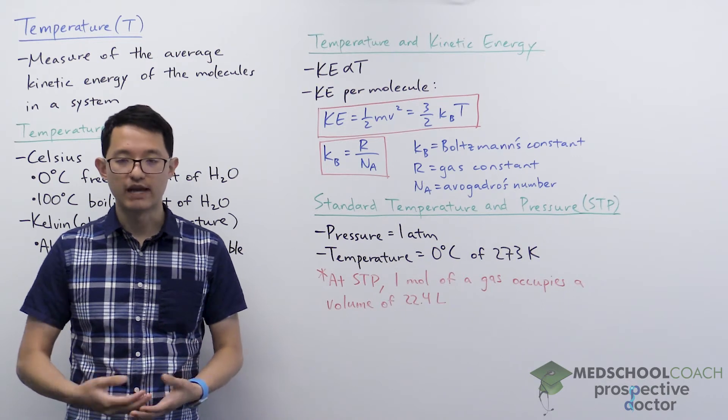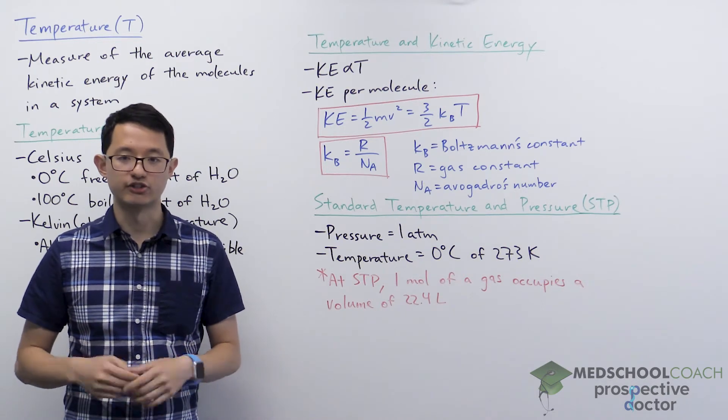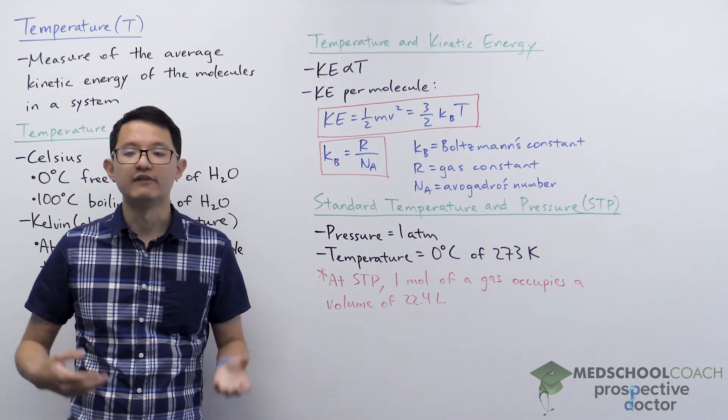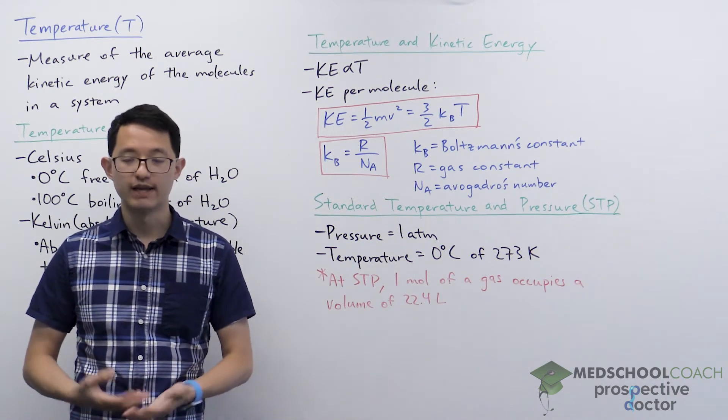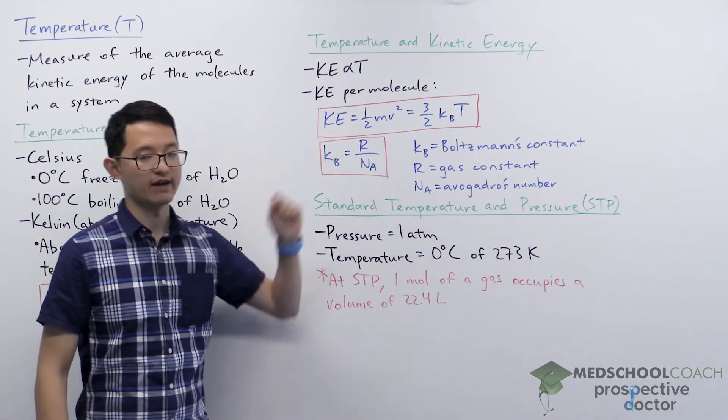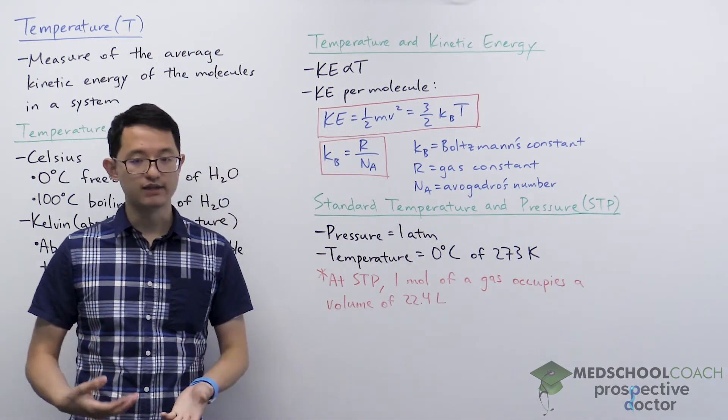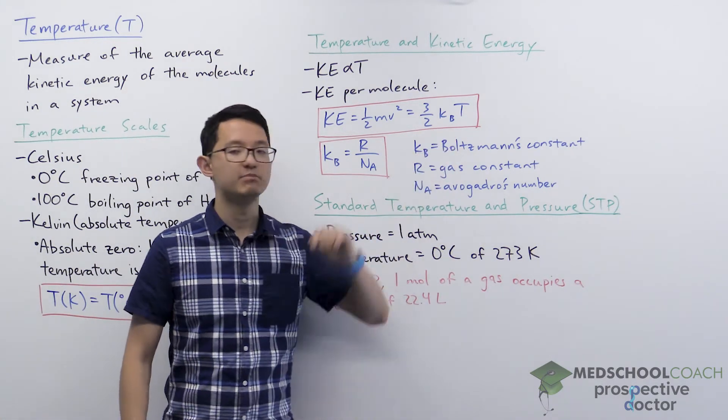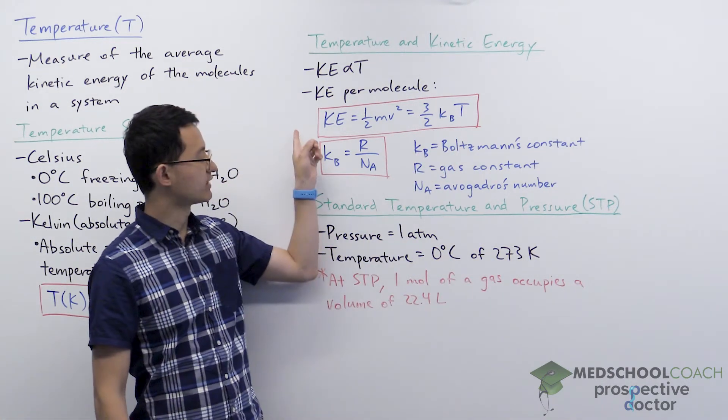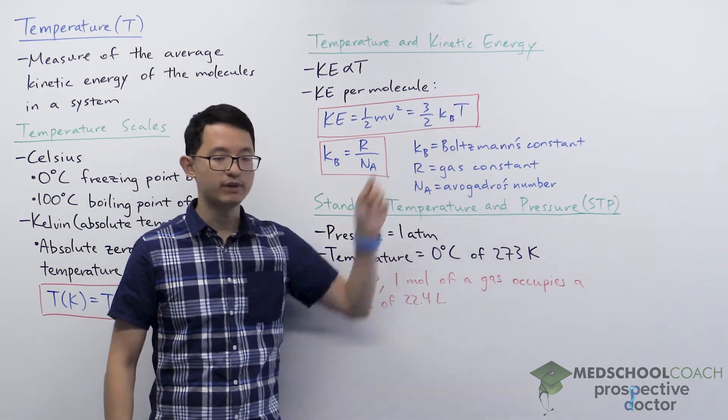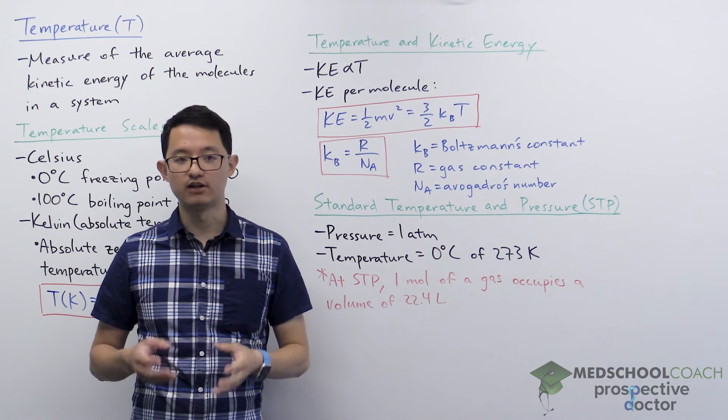There is an equation that we can use to see this relationship. So here we're going to look at the kinetic energy of individual molecules. As you recall from physics, kinetic energy is equal to one half mv squared but you can also express kinetic energy as three halves kbT. So you can see how kinetic energy is directly proportional to temperature where kb is the proportionality constant.